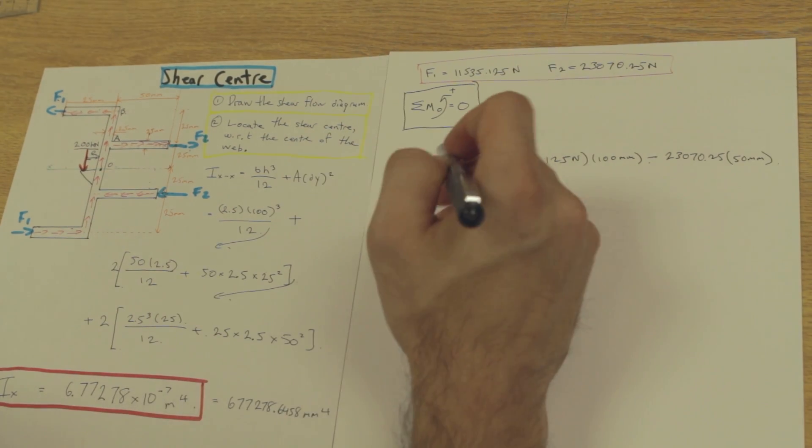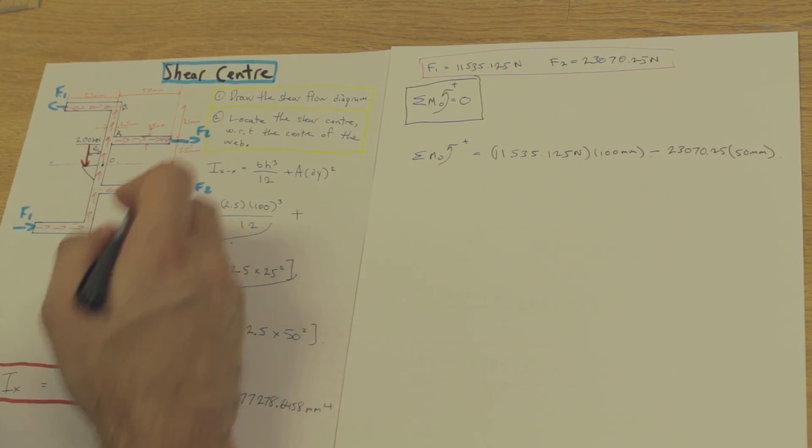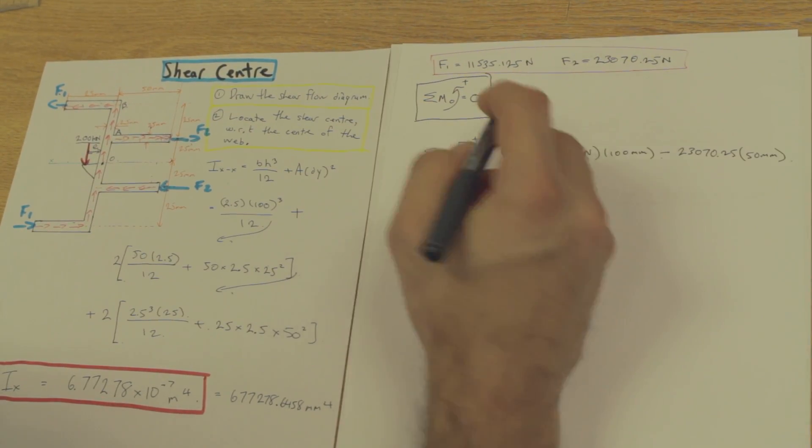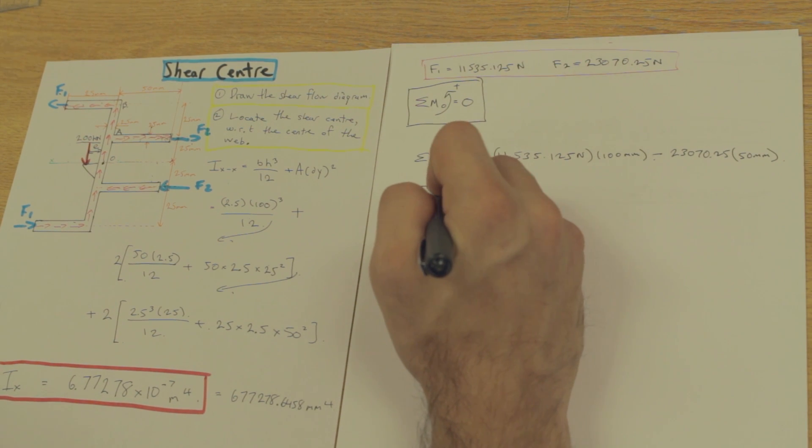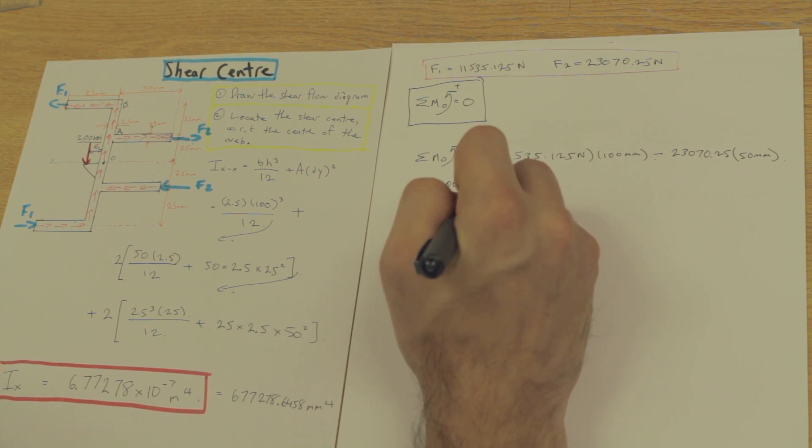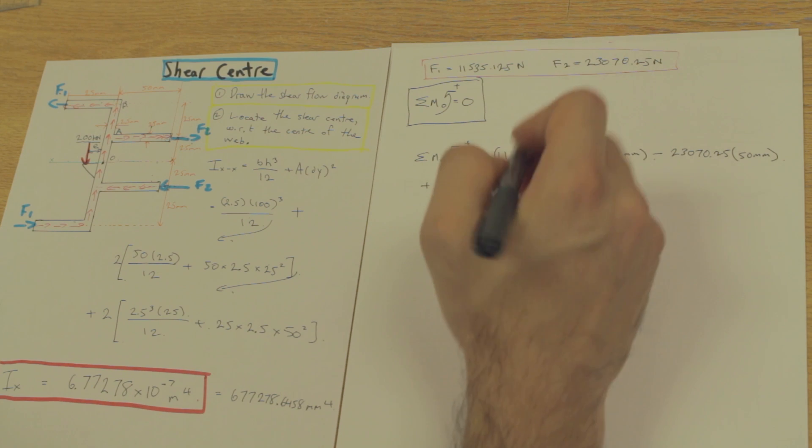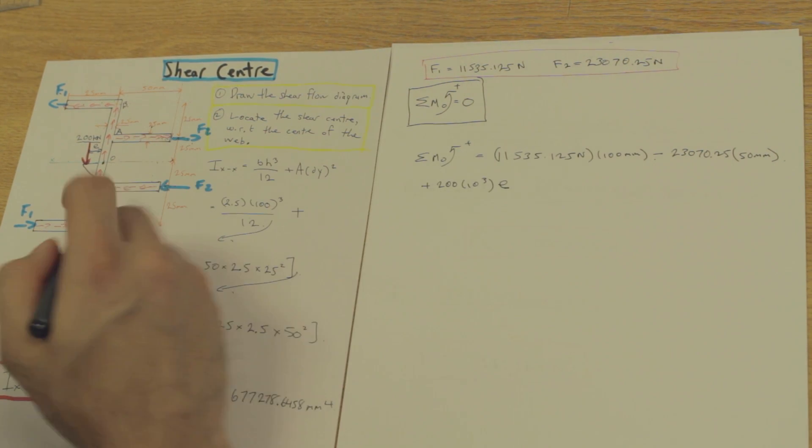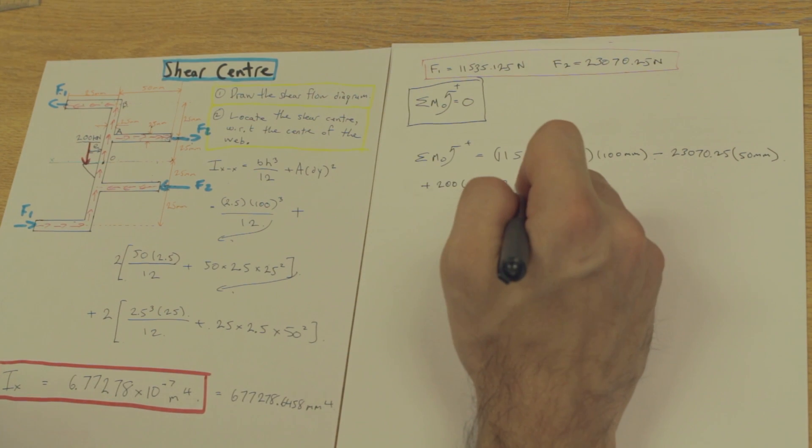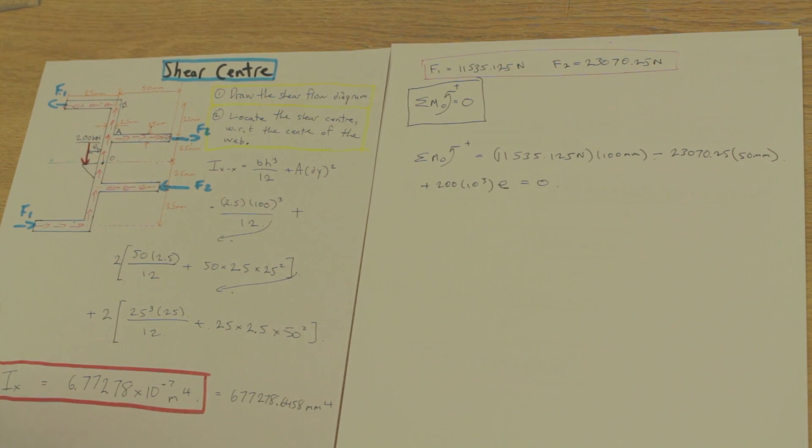E is our unknown here. And that is acting also in a positive direction. So we have 200 kilonewtons, so we're going to multiply by 10 to the 3 to change that into newtons, and we're going to multiply by E. Where E is the distance here. As I just explained, this is all equal to zero.